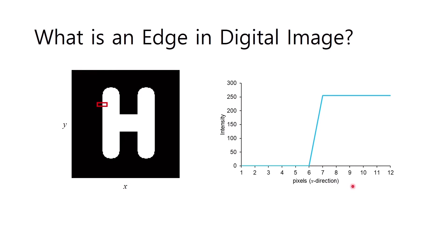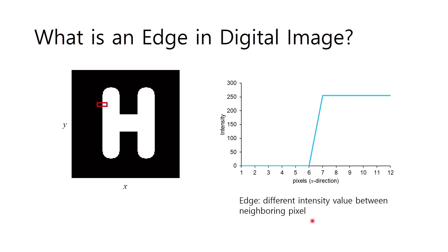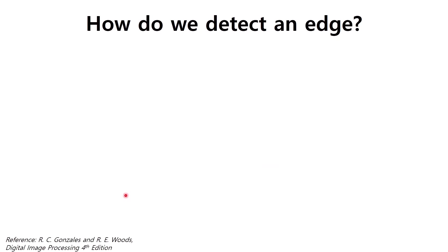As we can see in this graph, there is a different intensity value at pixel 6 and 7. This is the edge in the image. Simply, an edge is a different intensity value between neighboring pixels in the image.